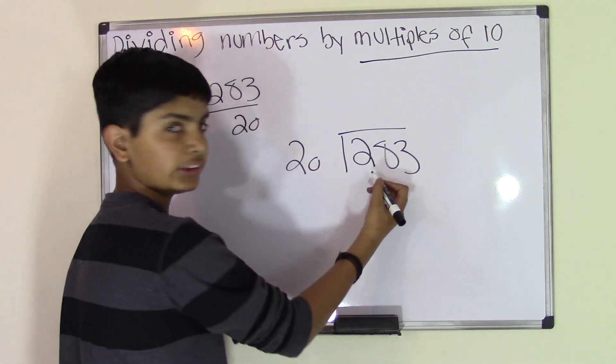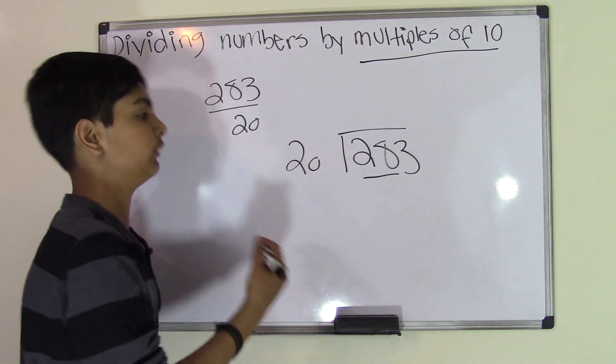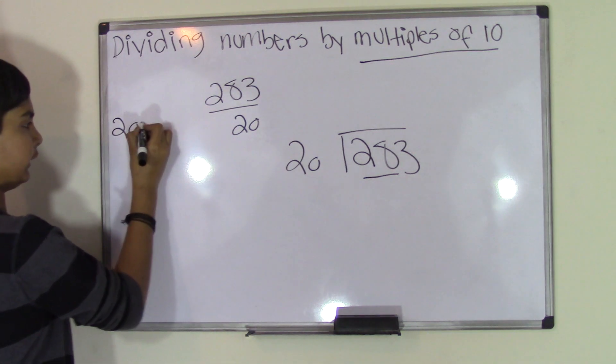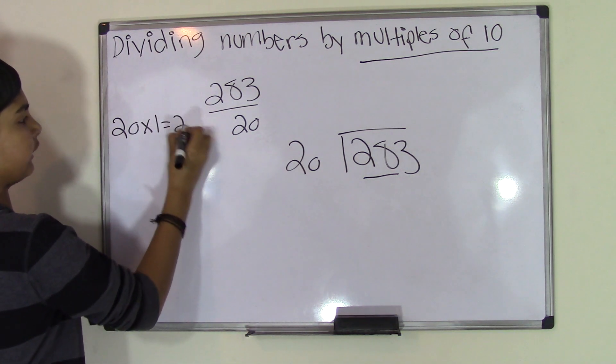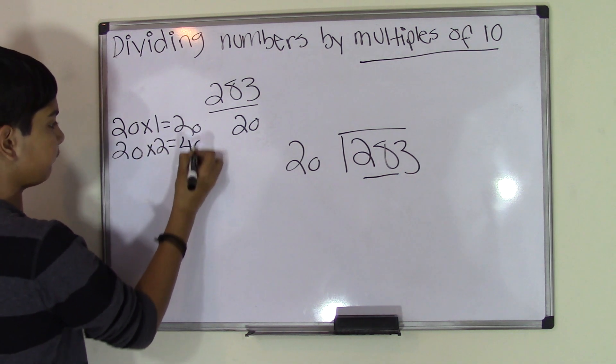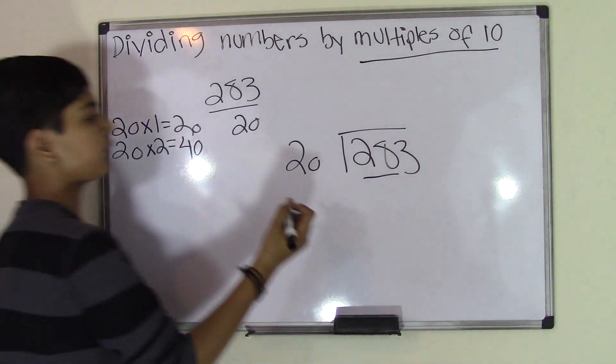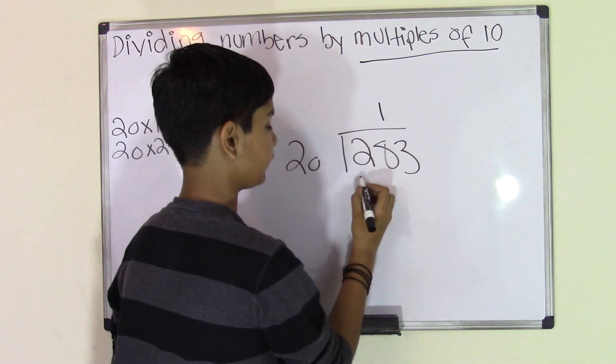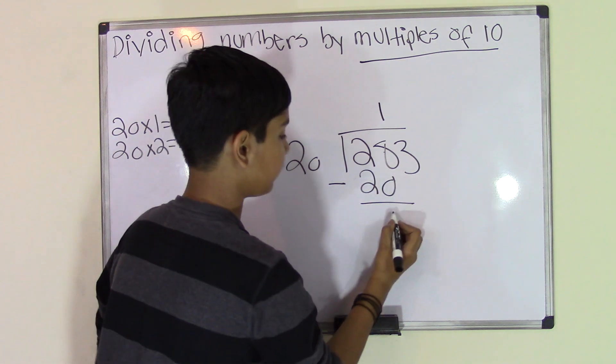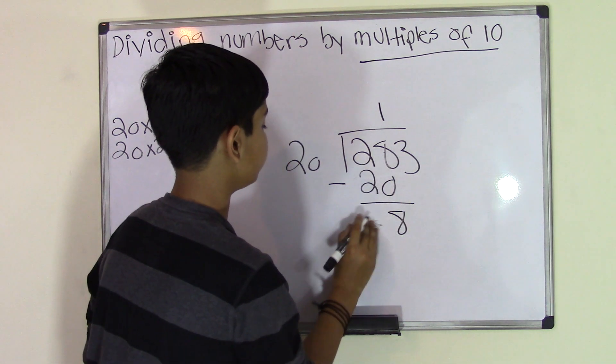Can 2 go into 20? No, because it's smaller than 20. Can 28 go into 20? Maybe, because 28 is greater than 20. Let's go on the times table of 20. We know that 20 times 1 is 20. 20 times 2 is 40. Well, 40 is greater than 28, so we'll have to go with 20 times 1. Now we subtract. 8 minus 0 is 8, 2 goes into 2, so we get 8.